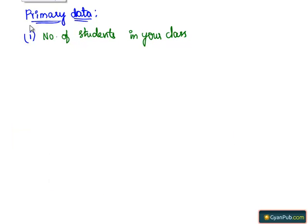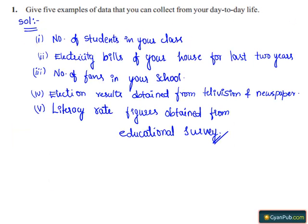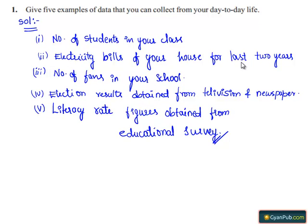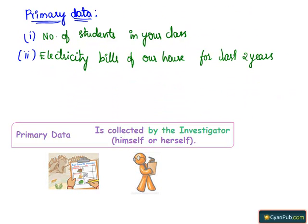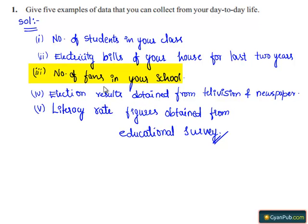Next, seeing question number 1: electricity bills of your house for the last 2 years. This can be checked by the investigator himself. Hence, this is also primary data. Now, number of fans in your school — this also can be collected by the investigator himself. Hence, this is also considered as primary data.